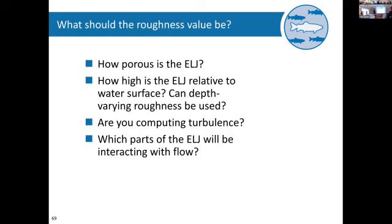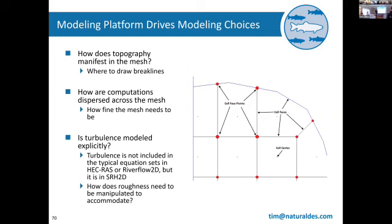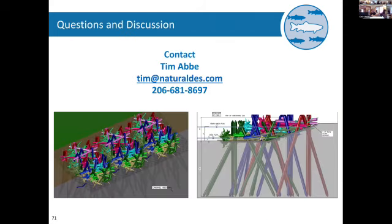So back to: what should the lovell number be? How important is your ELJ? How high is the backwater of water surface, and are you computing turbulence, and what parts of the ELJ are interacting with flow? We're constantly learning and improving this. How does the mesh manifest — knowing where to join break lines — and whether turbulence is modeled explicitly. It's not included in the typical equation for HEC-RAS or SRH-1D flow, but it is in SRH-2D. These are probably the three most common models out there.